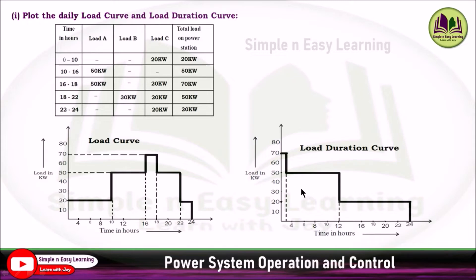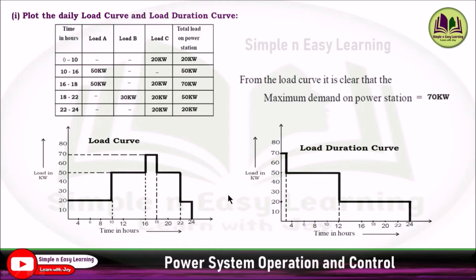Here is the load duration curve. 70 kilowatt is for 2 hours, and 50 kilowatt is for 10 hours — it comes from 10 to 16 as well as 18 to 22. 20 kilowatt is for 12 hours, covering 0 to 10 and 22 to 24. This is how you draw the load duration curve. From the load curve, it is observed that the maximum demand on the power station is 70 kilowatt.